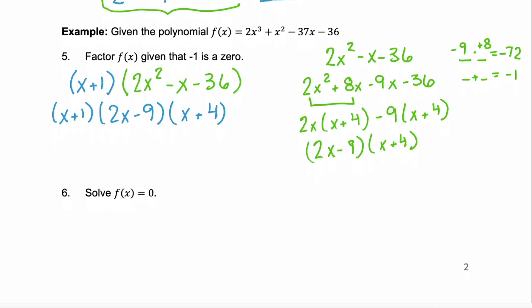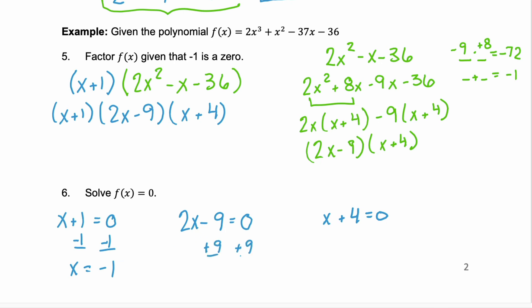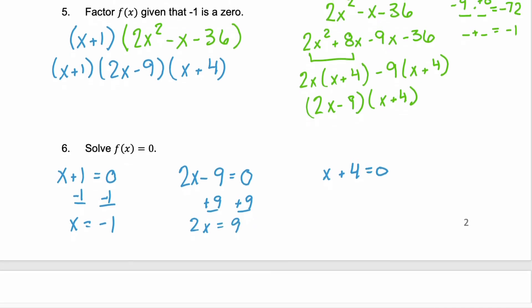So our fully factored form is x plus 1 times 2x minus 9 times x plus 4. Now in step 6 we need to solve f of x equals 0. To do that, you use the zero product property. So x plus 1 equals 0, 2x minus 9 equals 0, and x plus 4 equals 0. Solving each: the first gives x equals negative 1. Add 9 to both sides: 2x equals 9, divide by 2, and we get x equals 9 halves. And the last one: subtract 4 and we get x equals negative 4. So our zeros are negative 1, negative 4, and 9 halves.